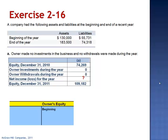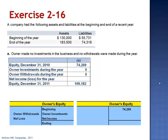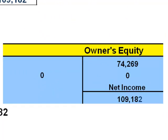Equity sits on the right-hand side of the equation and has a normal credit balance. Equity is increased by the owner's investments and any net income earned, and decreased by owner's withdrawals and any net losses, giving an ending credit balance. The beginning equity is $74,269, plus zero investments, minus zero withdrawals, plus net income equals the ending equity of $109,182. Subtracting $74,269 from each side gives net income of $34,913. So in this case we do not have a net loss — we have net income of $34,913.